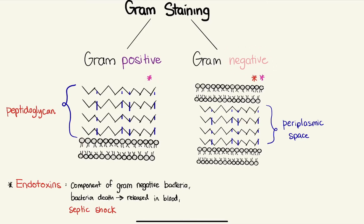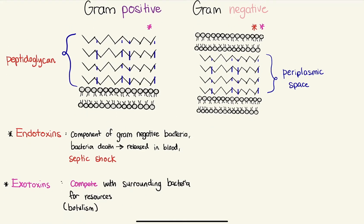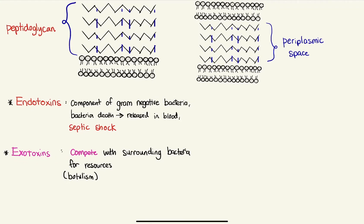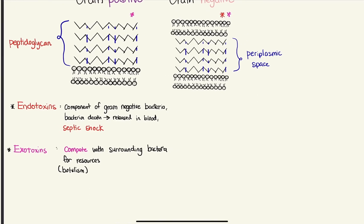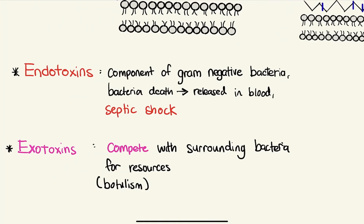You might be noticing these colors here, and this refers to the toxins that are present. The gram positive has exotoxins. Exotoxins are present in both gram positive and gram negative, and they allow the bacteria to compete with surrounding bacteria by sending toxins to attack other bacteria competing for the same resources. This is responsible for a very serious form of food poisoning — botulism.